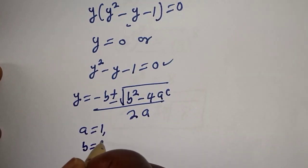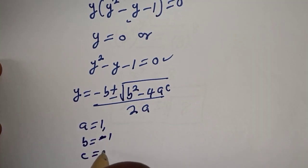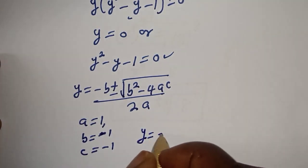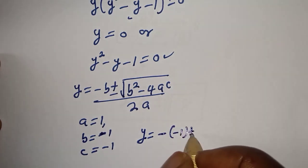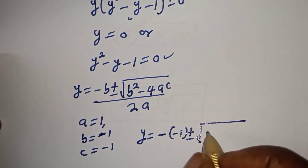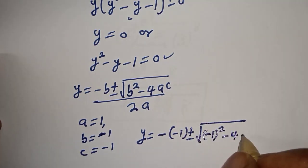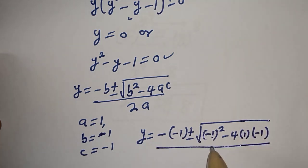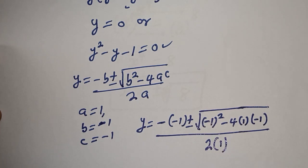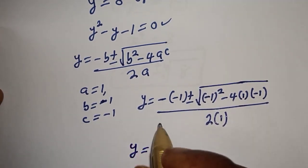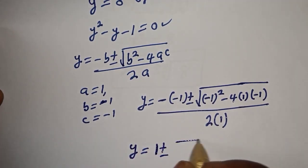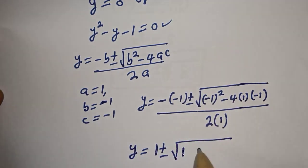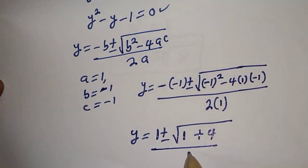From this equation, a equals 1, b equals negative 1, c equals negative 1. Substituting: y equals negative bracket negative 1 end bracket, plus or minus square root of negative 1 squared minus 4 times 1 times negative 1, divided by 2 times 1. That gives 1 plus or minus square root of 1 plus 4, over 2.